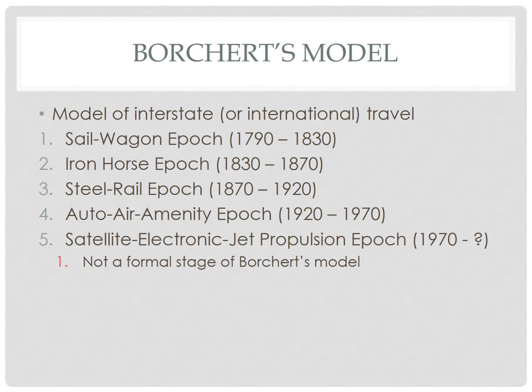Now let's discuss Boscher's model, which focuses on interstate — between states — travel. The model traces how we moved between different areas over time. It begins with the sail-wagon epoch, when boats and wagons were the primary means of travel and areas were fairly isolated.